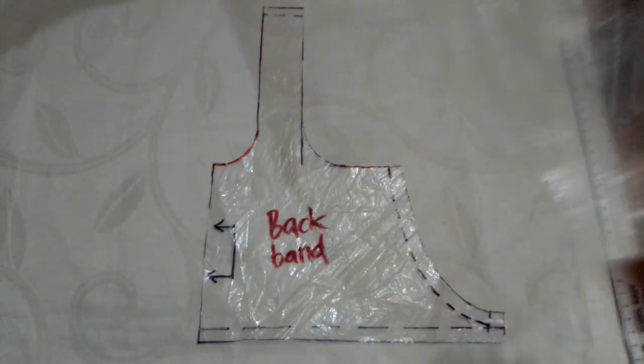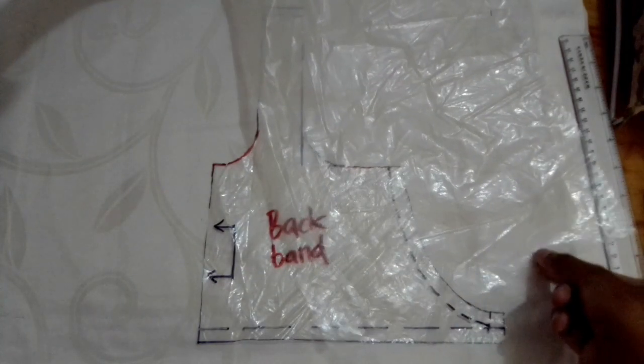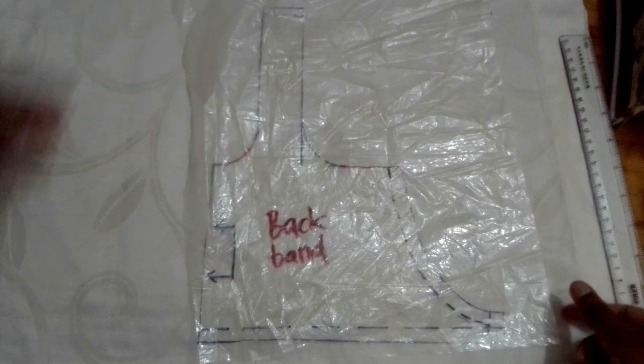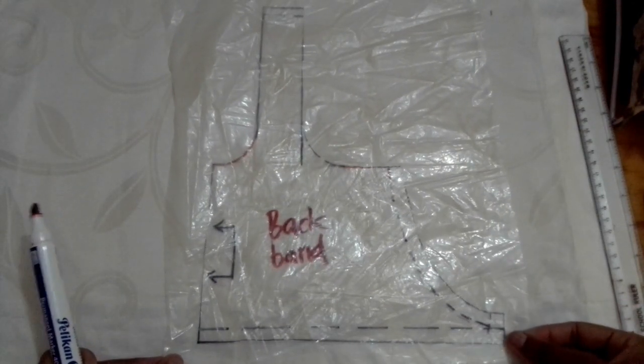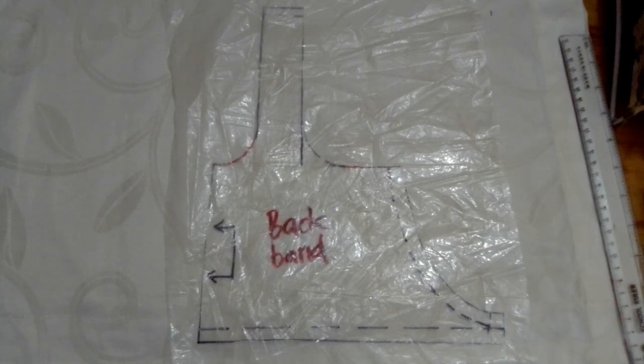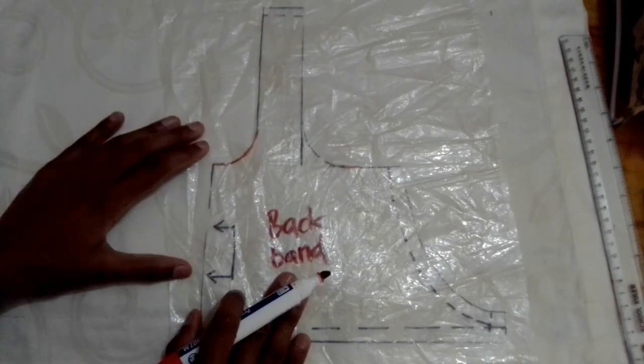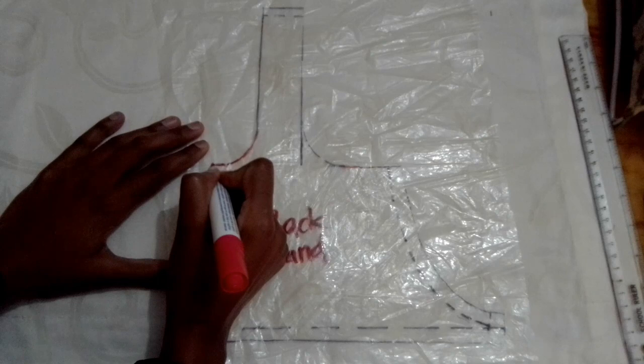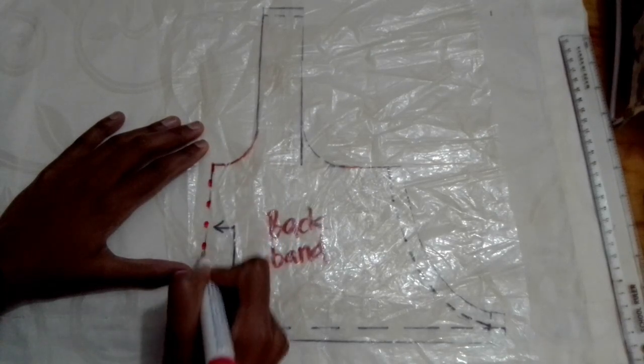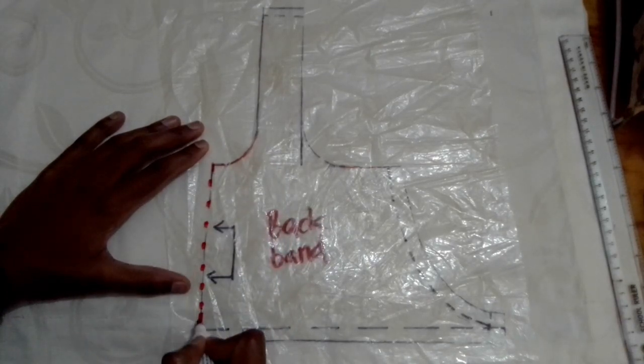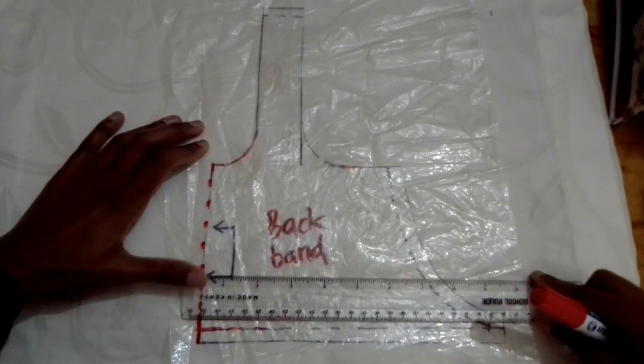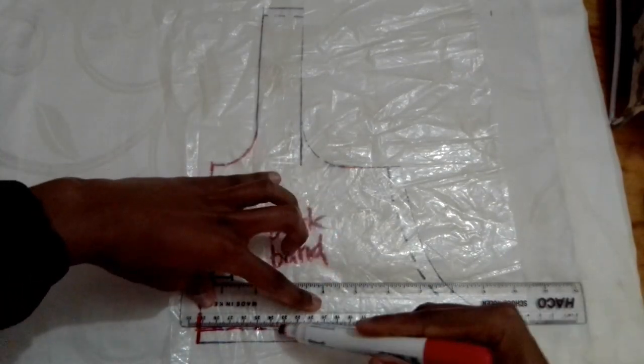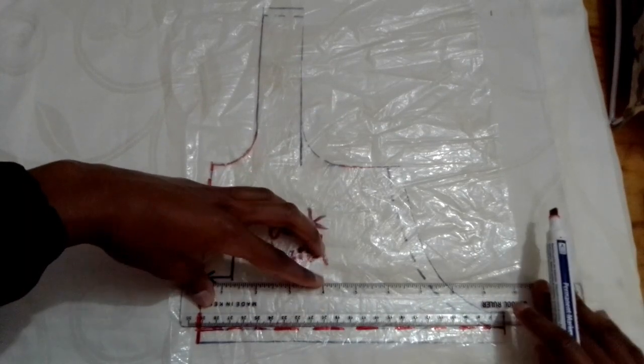Hey guys, today I'm going to show you how to draft a racer back backband for your sports bra using your original T-back backband. The first thing you're going to do is trace your backband starting with the center back. That should be a solid line. Then you're going to trace the seam line using a dotted line.